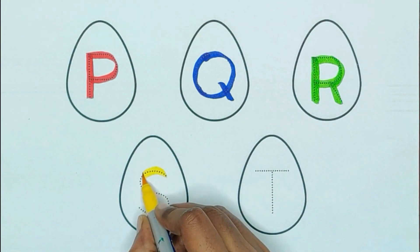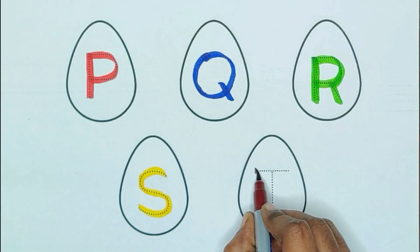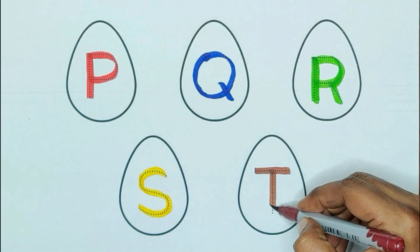Yellow color, S. S for strawberry. Brown color, T. T for tiger.